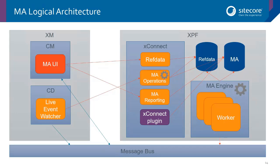If there's a successful add or update of an interaction, contact, or facet, it will add a work item to the automation processing pool. The marketing automation engine — which is brand new — processes work items from that pool in pulses. It's a standalone application that can run as a Windows service, a console application (useful for debugging), or as an Azure web job. There's also a version of the engine running on the marketing automation operations endpoint to process live events.